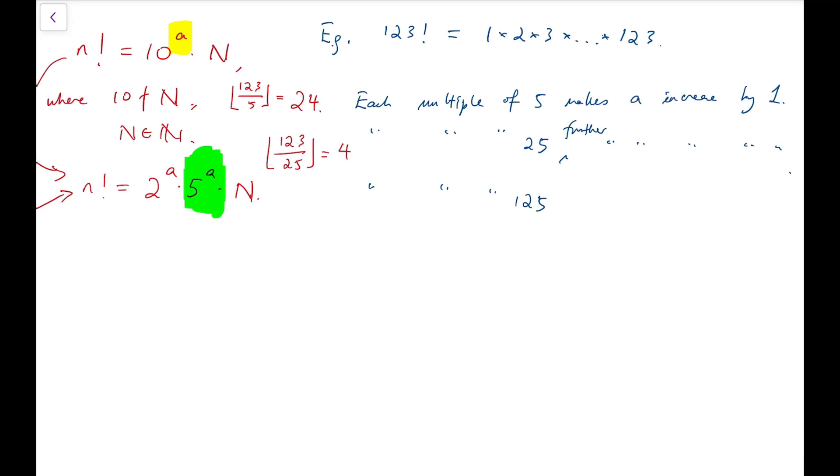Now from this idea, we can make a formula for this index A. We can say that for n factorial, equals to the floor function of n over 5, plus the floor function of n over 25, all the way, being n, making this an infinite series. So this is the formula to calculate the number of trailing zeros of n factorial.